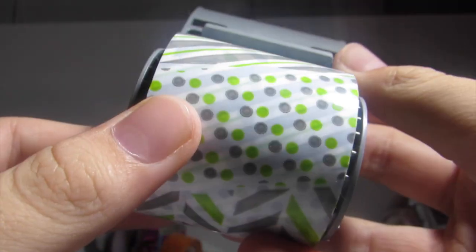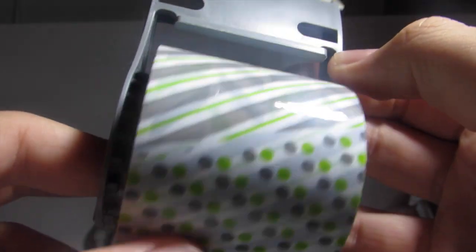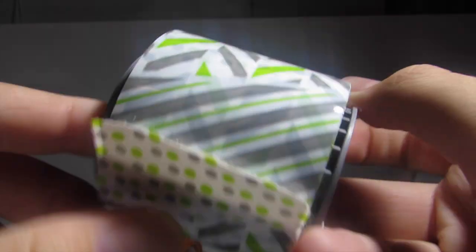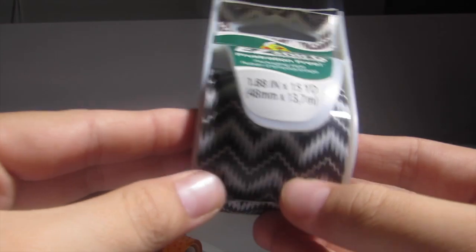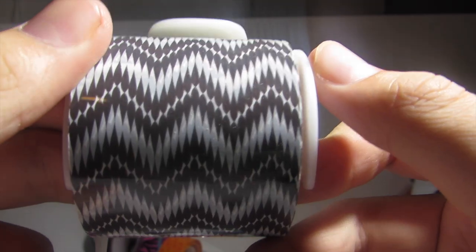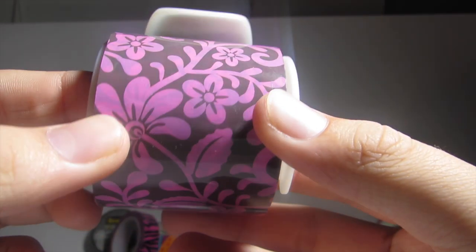But this scotch packaging tape I absolutely love. I like lime green and gray and black and all. I just think this is a really nice pattern. This is a duck brand one I got. I really like this one a lot. This one is just pretty cool as well. It's like this brown background pink.